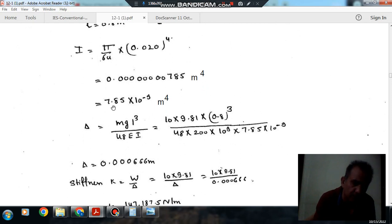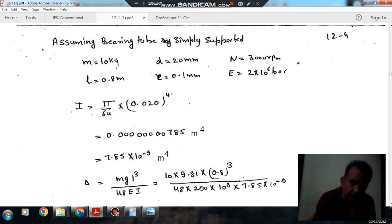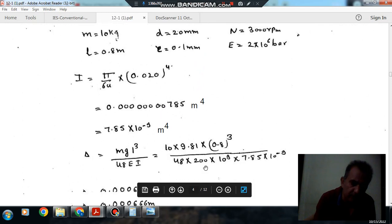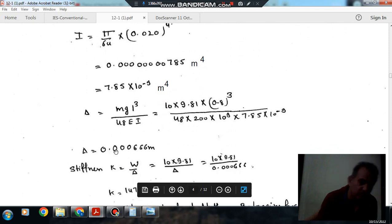Now putting the value of I = 7.85×10^-9 m^4 and L in meters, we can find the deflection. Deflection is 0.00066 m.